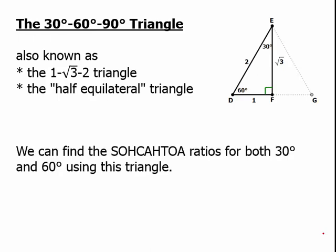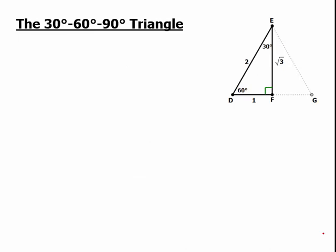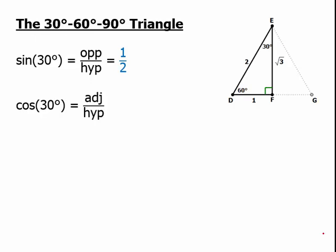We can use SOHCAHTOA ratios for both the 30-degree and 60-degree angle using this triangle, because we know all the sides. So first of all, let's start with 30 degrees. From 30 degrees, the opposite is 1, the hypotenuse is 2, so the sine is just 1/2. For the cosine, the adjacent is √3, and the hypotenuse is still 2, so that's √3 over 2.